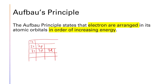When l equals 0 (which corresponds to the s orbital), and n equals 1, you cannot have a p orbital at orbit 1. So at orbit 1 you can only find the s orbital. Continuing the table: 4s, 4p, 4d, 4f, and so on.